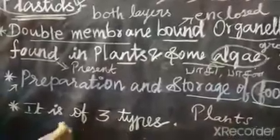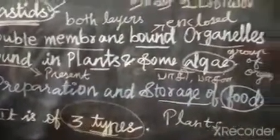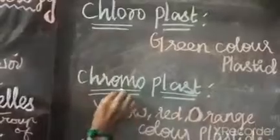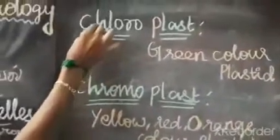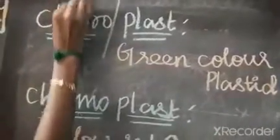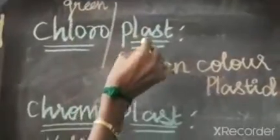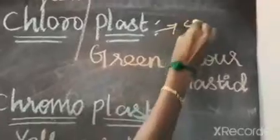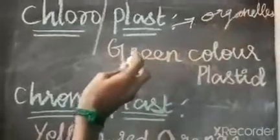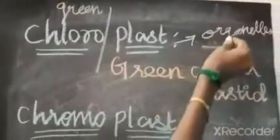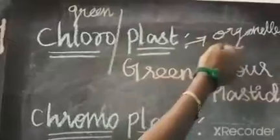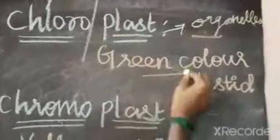Plastids consist of three types: chloroplasts, chromoplasts, and leucoplasts. The first one is chloroplasts. Chloro means green, and plast means living substance or organelles. So chloroplasts, the first type, are also organelles — they are the green color plastids.